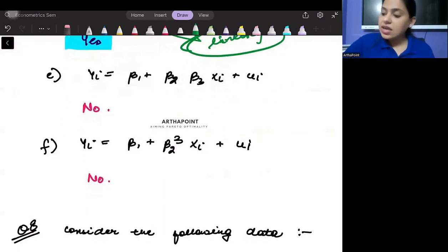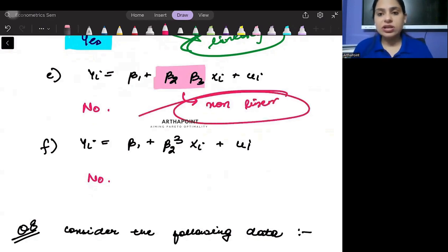Come into the next case. Here, I see that the betas are not coming in the linear format, because there is a product of two betas. So because the betas are coming non-linearly, this becomes a non-linear model to work with.